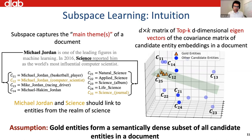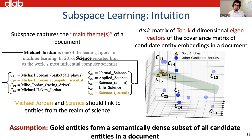There can be multiple topics in a document, and since we have multiple components, each can capture a different latent facet or relationship between entities. So there is a chance this can handle multi-topic textual documents, but since publicly available benchmark datasets mostly have only one topic, we couldn't validate this empirically. It's also hard to validate because the notion of 'topic' is quite ambiguous and not easy to quantify without manual or qualitative analysis.